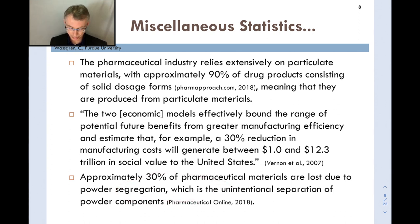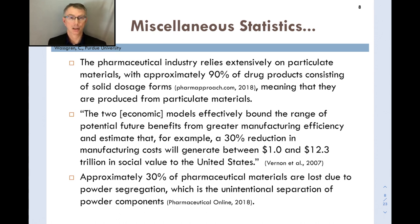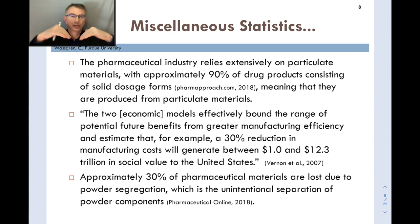Approximately 30% of pharmaceutical materials are lost due to powder segregation — the unintentional separation of powder components. If you have two free-flowing particulate materials of different sizes, they'll tend to separate or unmix, resulting in poor content uniformity and material that must be discarded. This often happens at the end of discharge from a hopper, where a pronounced V-shaped free surface causes larger and finer particles to separate.